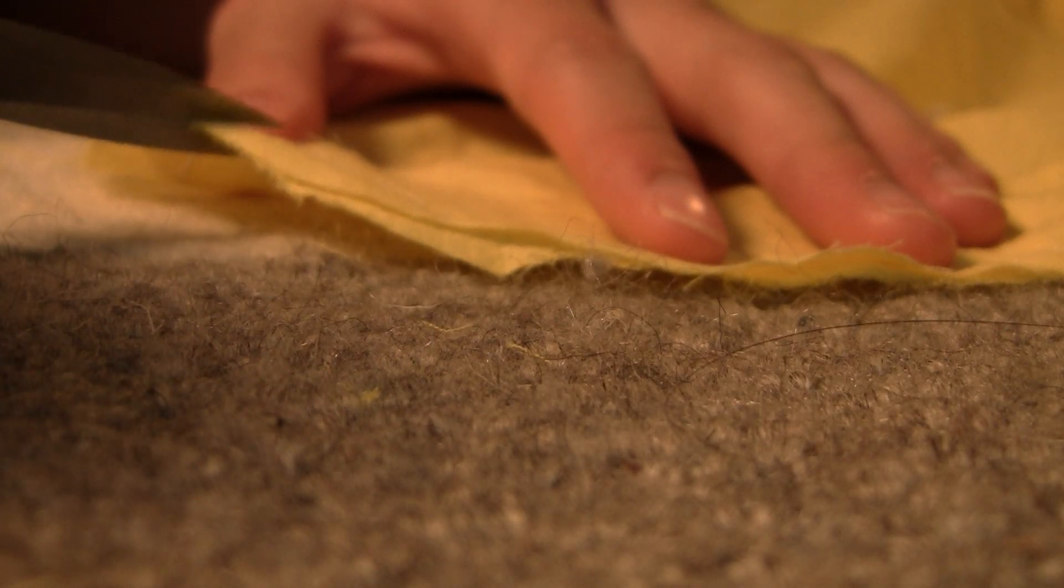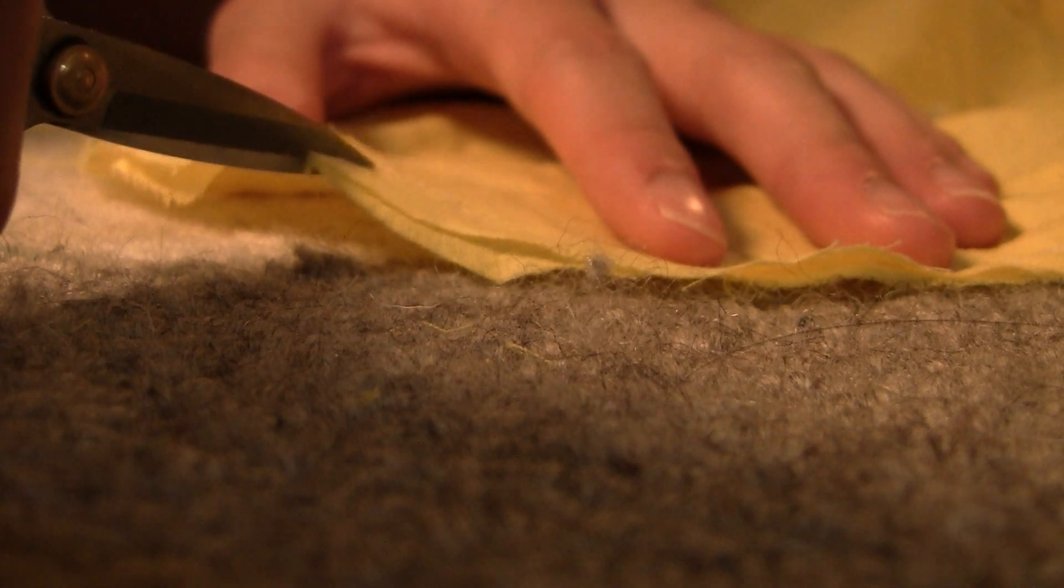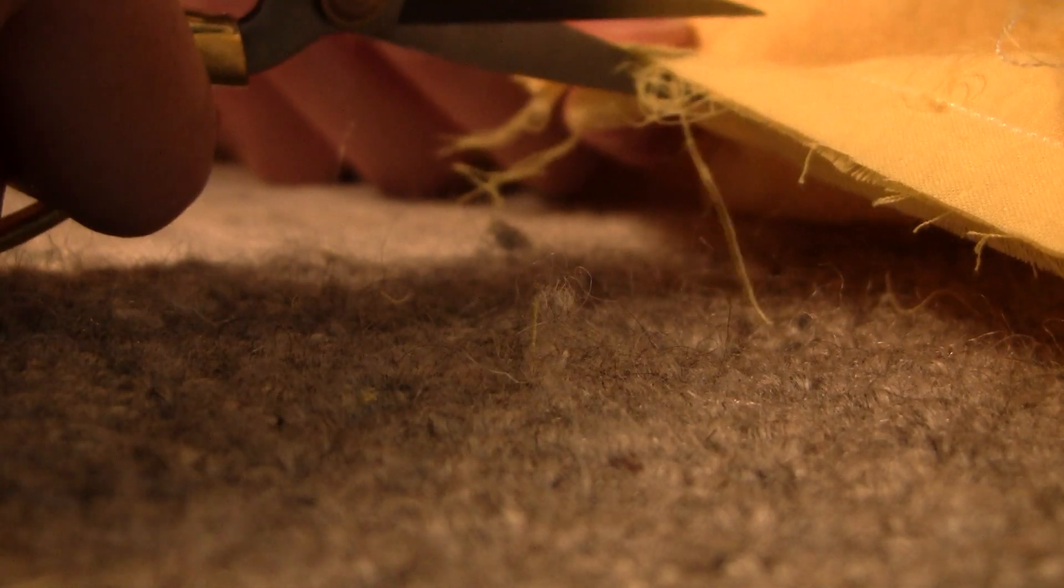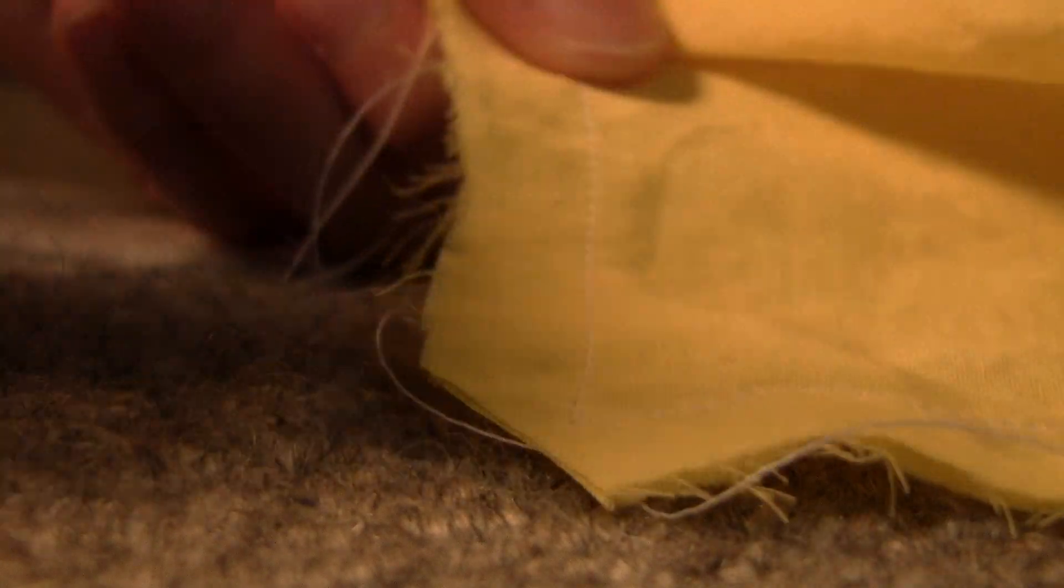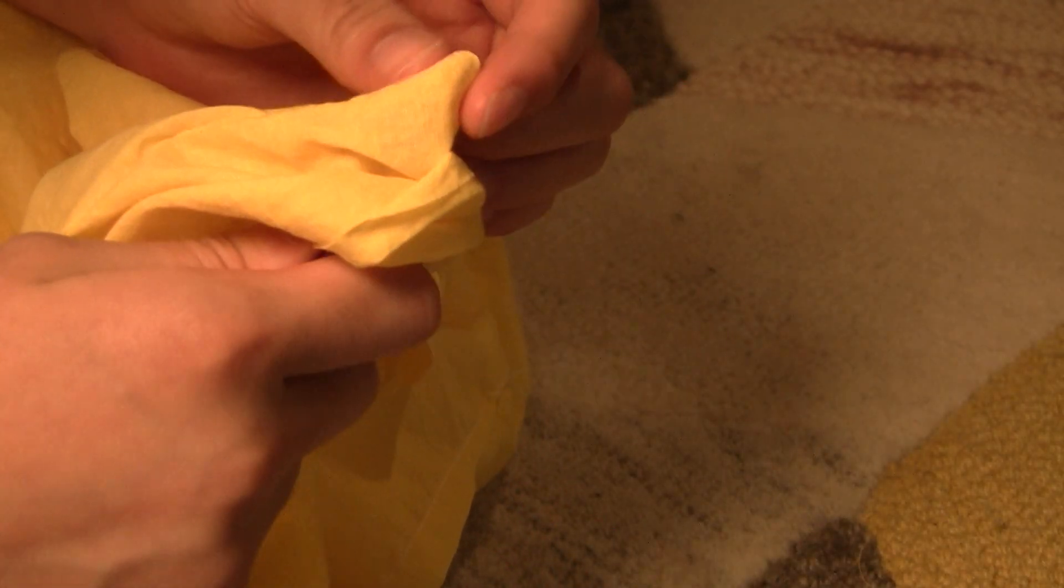So that the facing turned neatly around the edges of the blouse, I clipped all the curves and corners. I feel like whenever I do this, I'm too afraid of clipping through the stitches, so it's always kind of ineffective. I then used a crochet hook to poke out the corners.